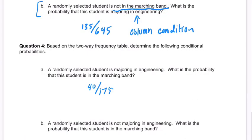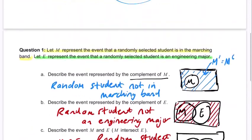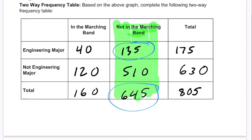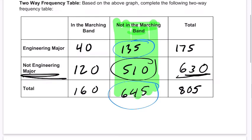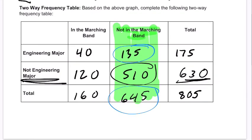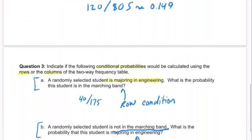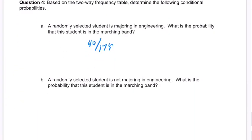They're not majoring in engineering — what is the probability that they're in the marching band? Out of 630 students, there are 510 that are not in the marching band and 120 that are in the marching band. So there were 120 students in the marching band, given that we know they're not majoring in engineering, and there were 630 in total. That's our probability — and you can write that as a decimal.